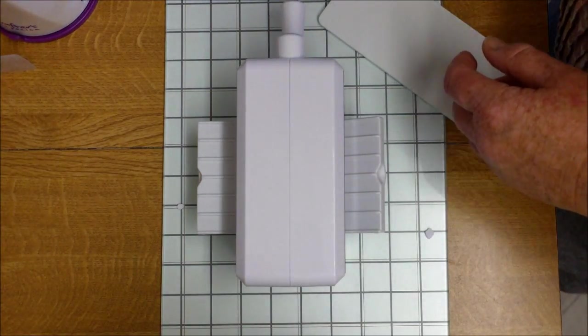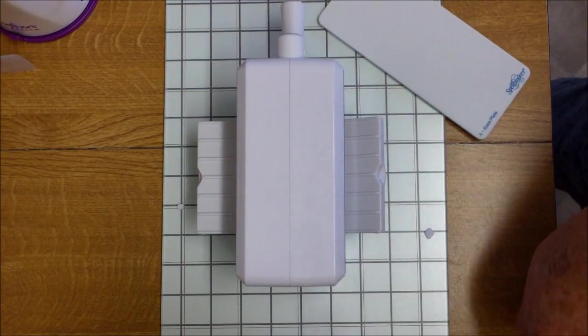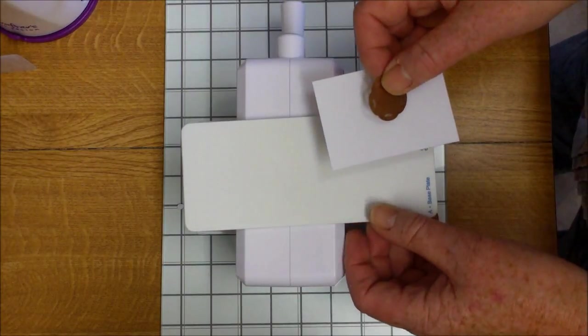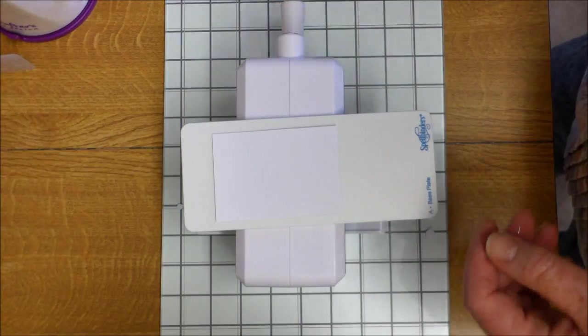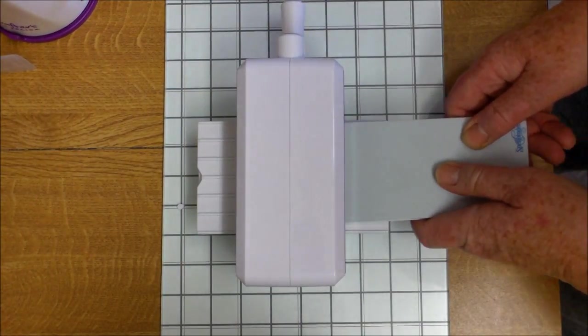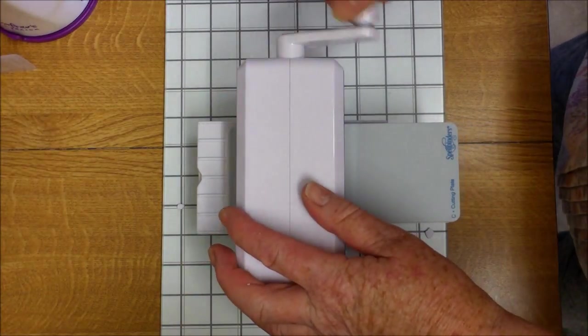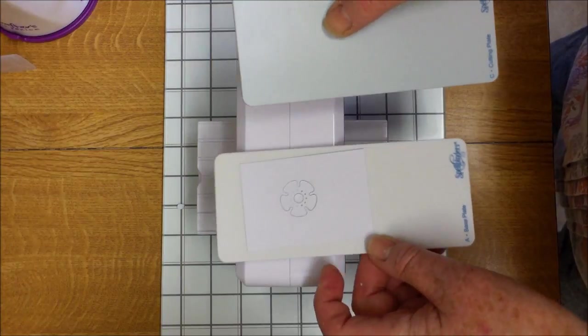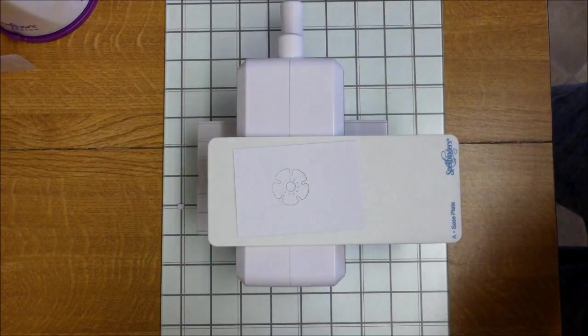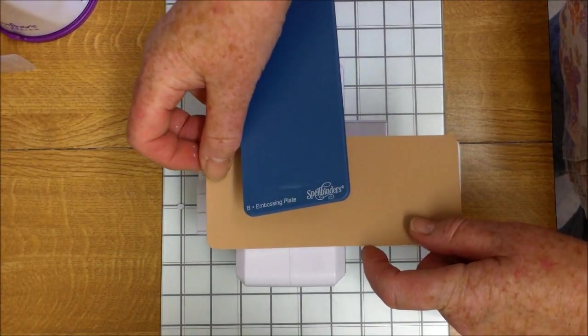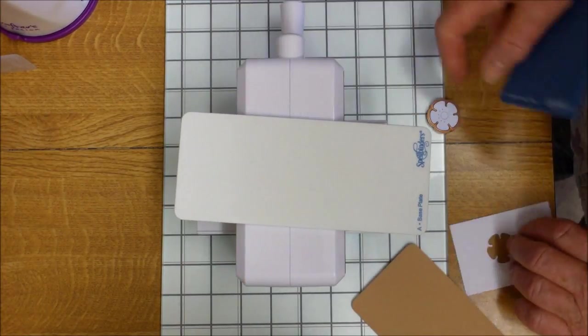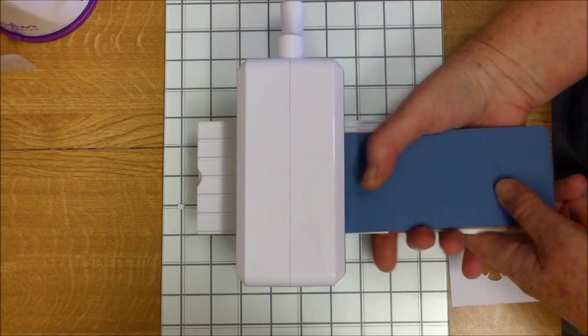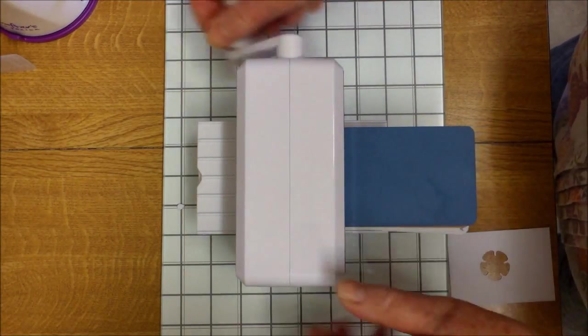Using it with the Tudor Rose to see what happens when we try embossing. Again, base plate, die, paper, cutting plate, and run it through the machine. Replacing the cutting plate, well it's come off, with the rubber mat, and the embossing plate. I haven't done this before on this machine, so let's see how it goes.